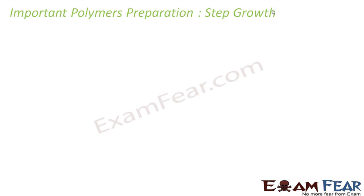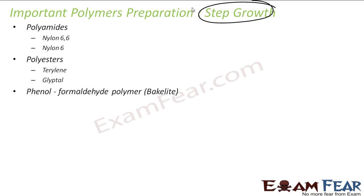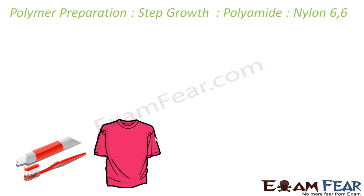Now we'll talk about some of the important polymers that are prepared using the step-growth polymerization reaction. We'll talk about polyamides — nylon 66 and nylon 6 — polystyrene, preparation of terylene, glyptal, preparation of phenol-formaldehyde also called bakelite, and preparation of melamine. We'll see each of these preparations.